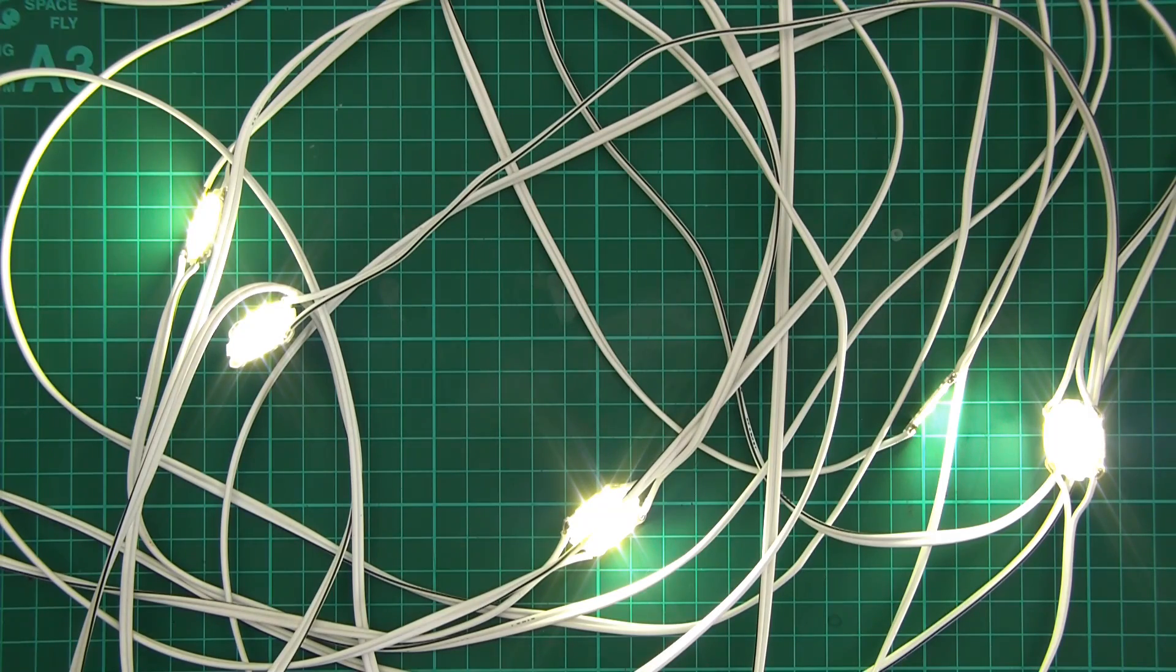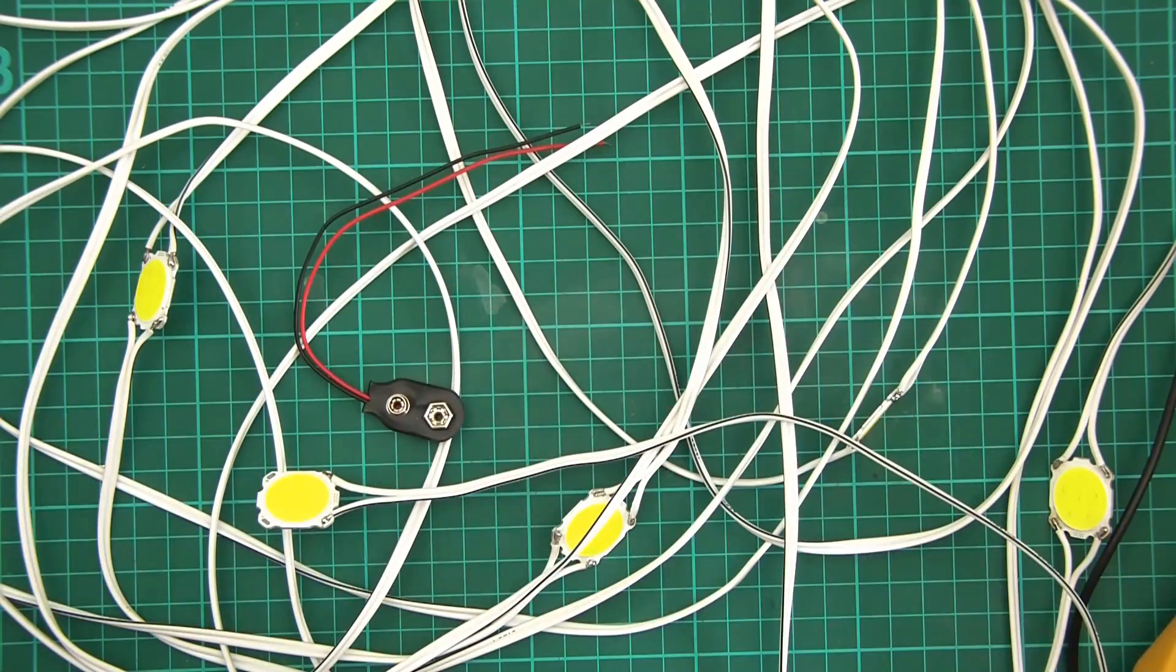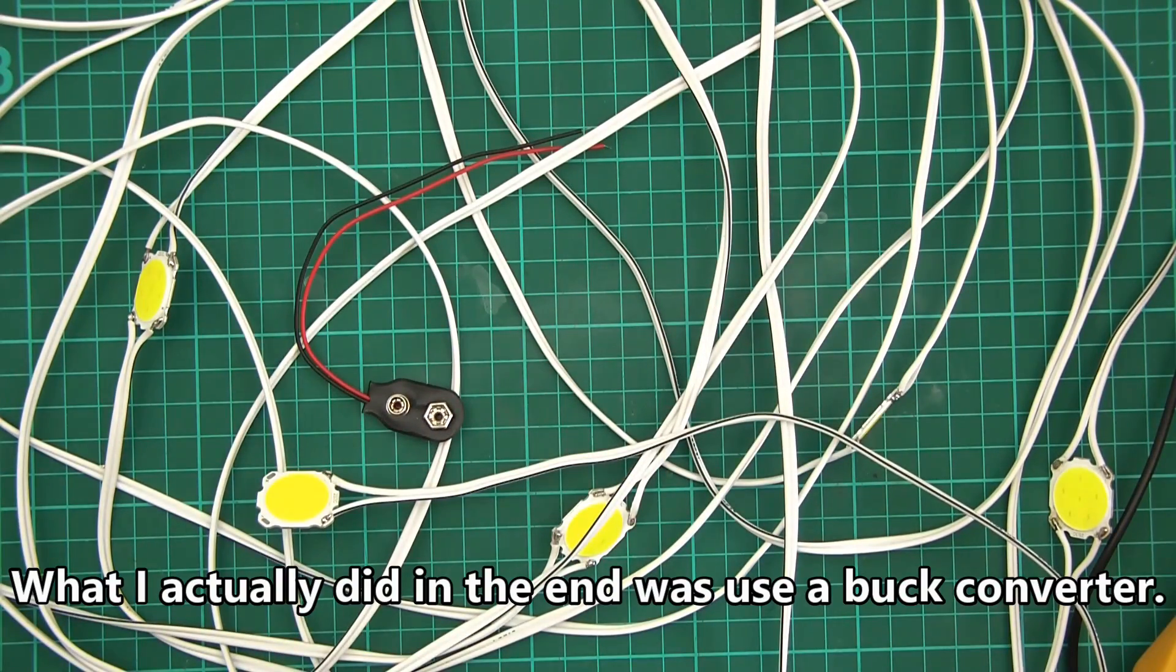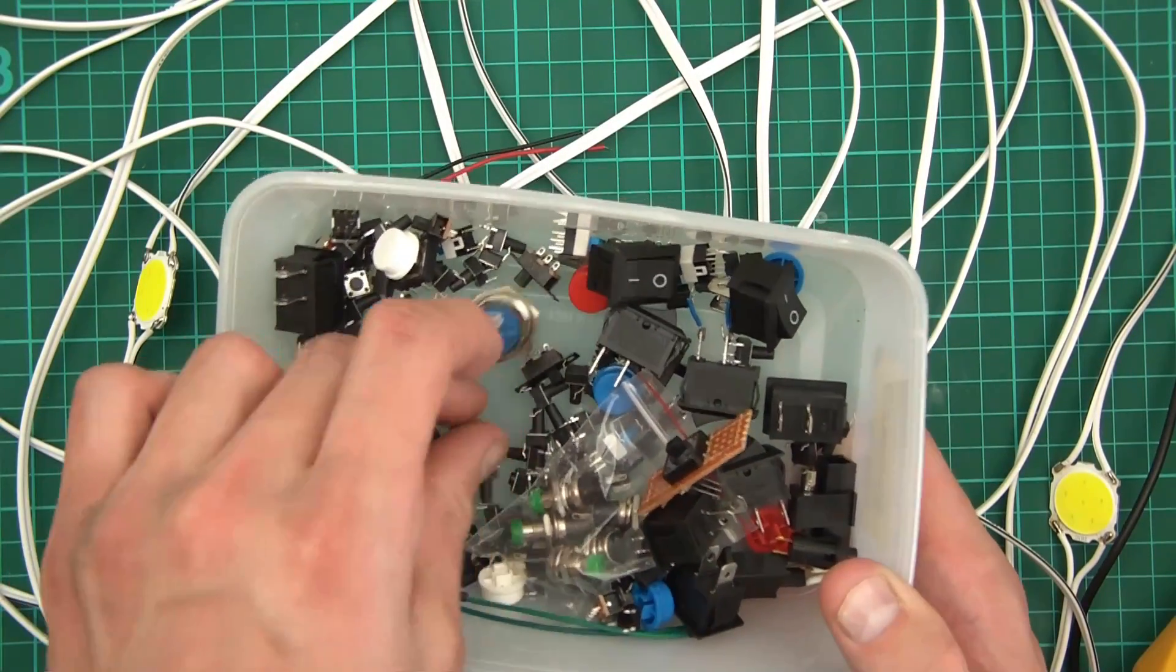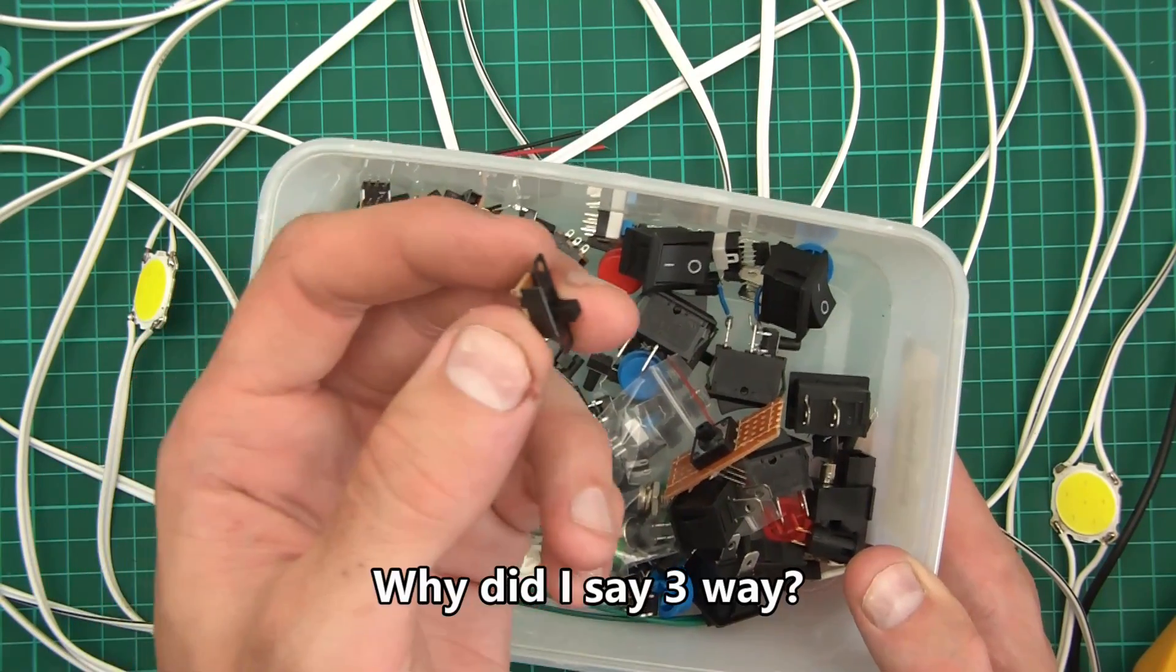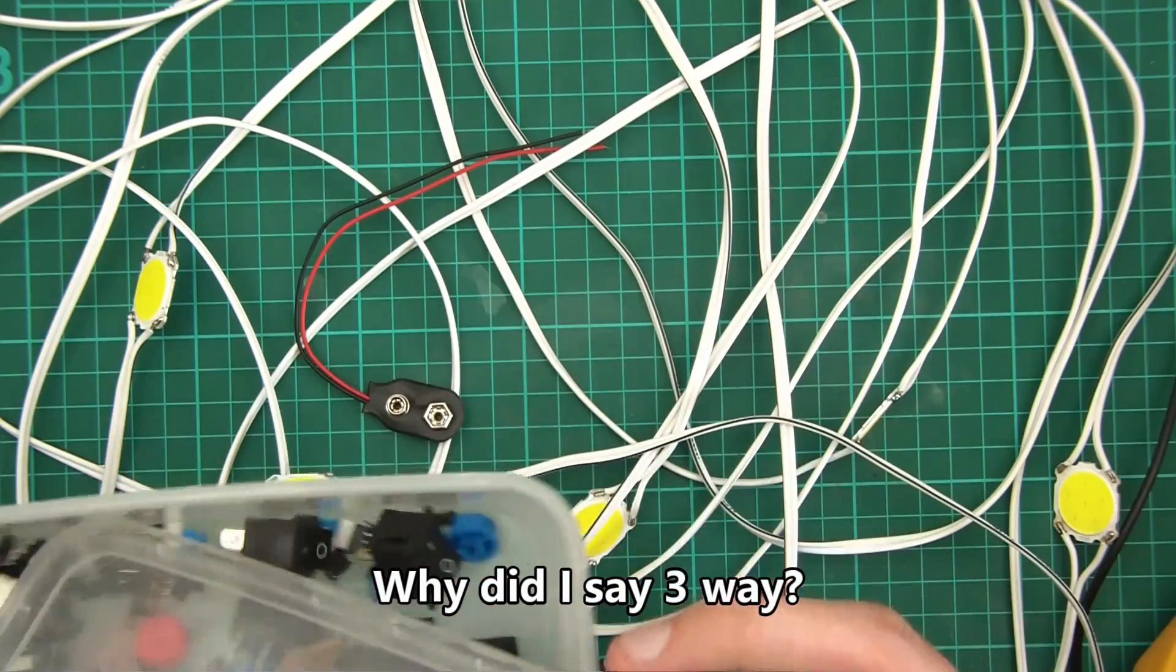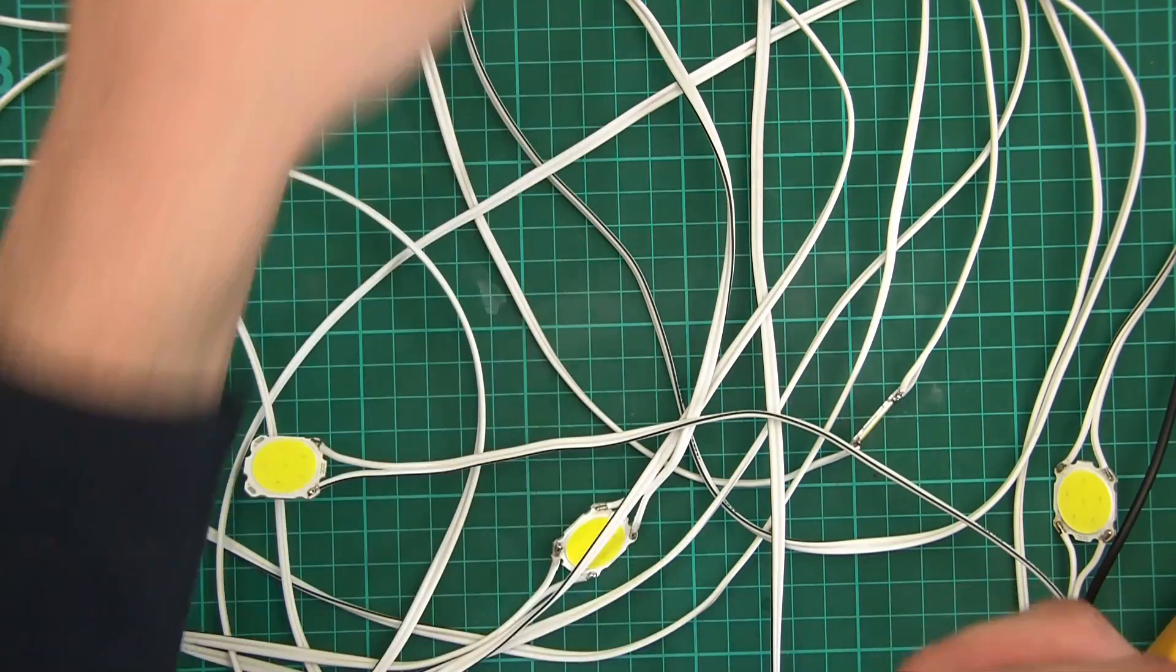So next I need to look for a charger. I've got this 9 volt thing here so I'll just have to use one of those batteries for now. But I also need a switch. So that switch looks about right, a basic three-way switch. That'll do. So I'll solder these on now. It should be fairly easy, I hope.